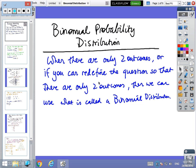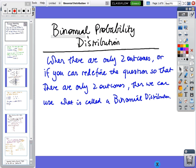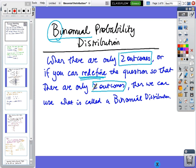In this distribution we've got the word binomial. The prefix 'bi' indicates that there's going to be two. When there are only two outcomes, or if you can redefine the question so that there are only two outcomes, you can use the idea of the complement. Once we have only two outcomes - passing and failing, winning and losing - then we've got a binomial distribution.